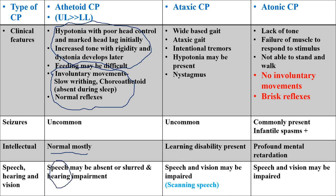In ataxic CP, due to cerebellar involvement, the patient has all cerebellar signs: wide-based ataxic gait, intention tremor when performing any task, hypotonia, and nystagmus. Seizures are uncommon but the patient has learning disability, intellectual impairment, speech and vision impairment, and scanning speech is characteristically present. In atonic CP, there is lack of tone due to extensive brain damage; failure of muscles to respond to stimuli means the patient is not able to stand, walk, or perform any activity.